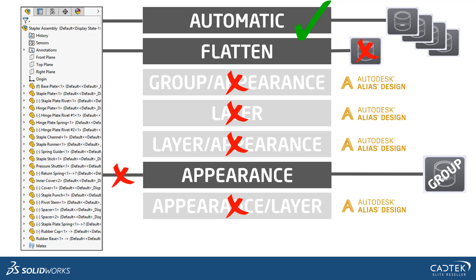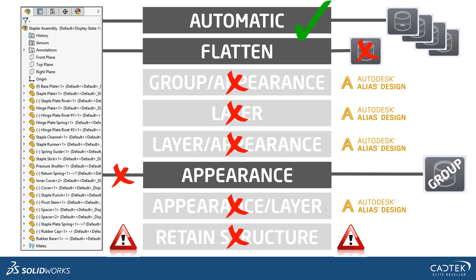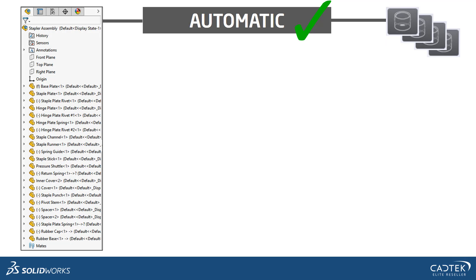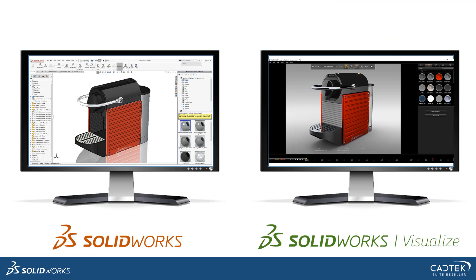Then we've got Appearance Layer, which is again an Alias one. And finally we've got Retain Structure. This can be quite useful but also fairly dangerous. It brings in your hierarchy from your assembly, so all parts and assemblies are there, but then it splits all of the parts into individual faces available for selection. So if you had a part with multiple faces, each one would be a single entity. Obviously if you're painting something up, that's not the best one to use. We specifically suggest using the Automatic one — it's certainly the best for SOLIDWORKS CAD data.